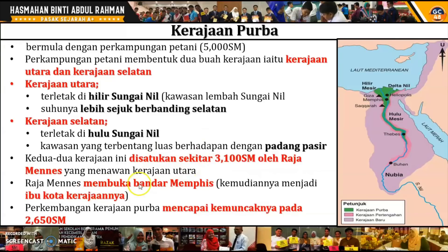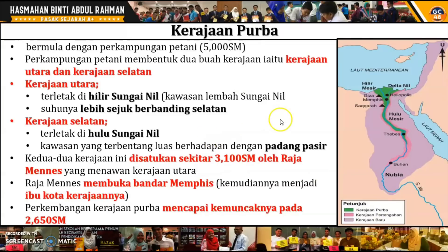Raja Menas telah membuka bandar Memphis, yang kemudiannya menjadi ibu kota kerajaannya. Perkembangan Kerajaan Purba mencapai kemuncaknya pada tahun 2650 sebelum Masihi. Itulah tentang Kerajaan Purba.